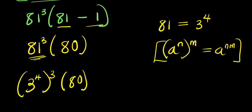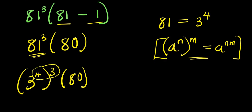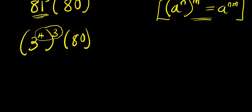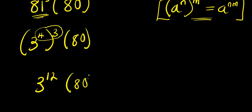So we apply this identity here. We are now going to multiply the exponents — that is four times three, which is twelve. So we are going to have three to the power of twelve times eighty.